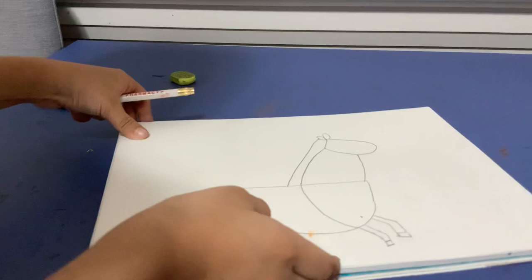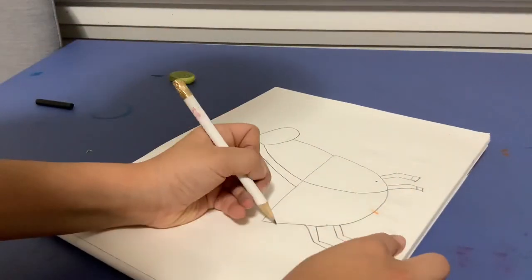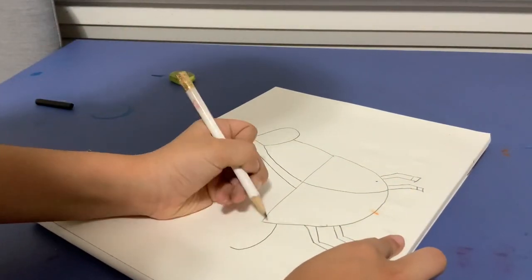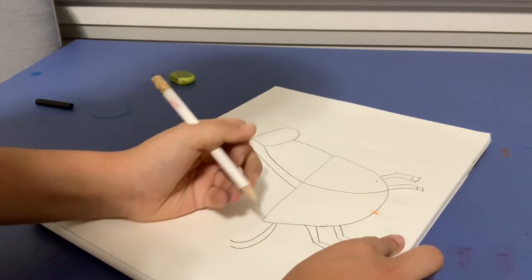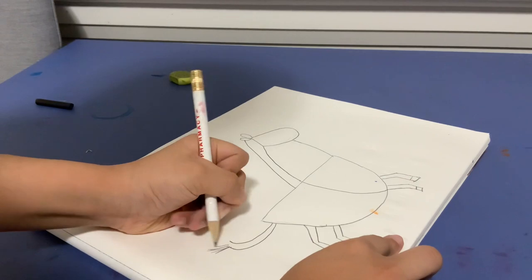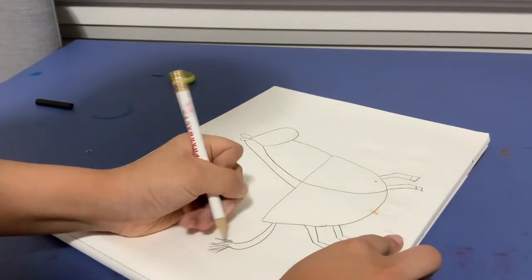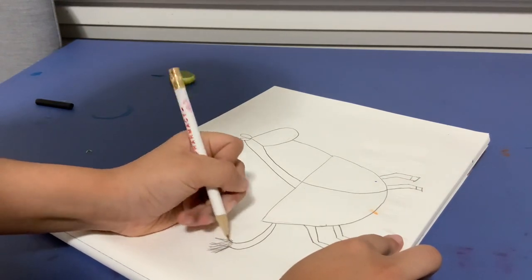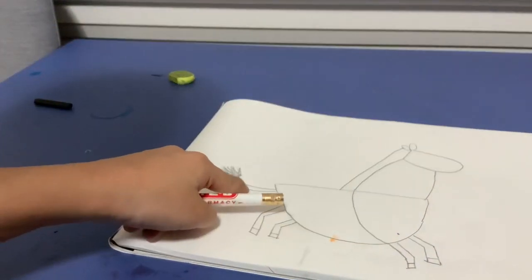And then we're going to turn it over just to make it easier and make a J. And then make another J that's smaller right on top. Then we're going to make lines just like this to make the zebra's tail. Now we have its tail.